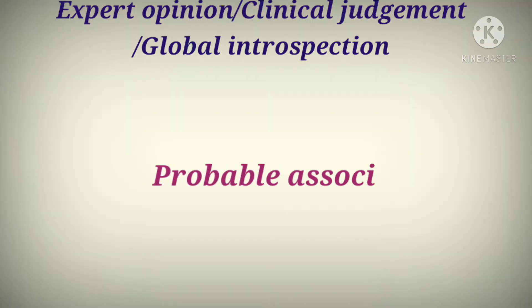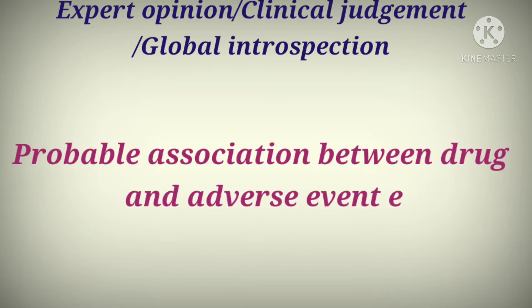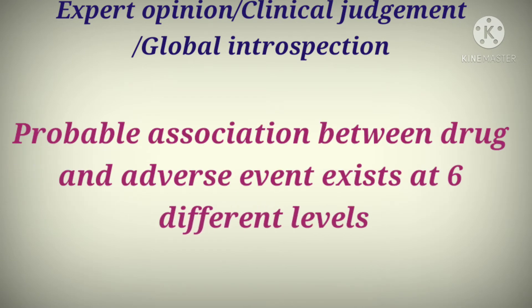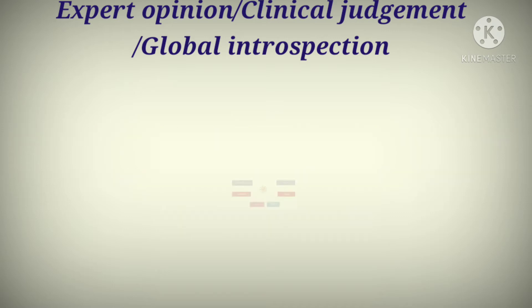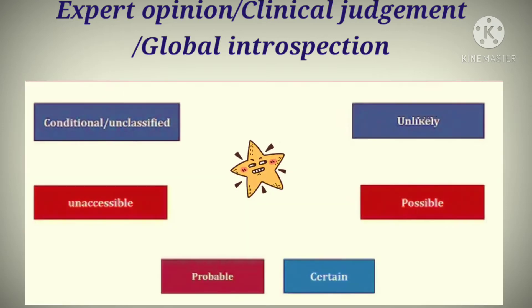As per this method, the probable association between drug and adverse event exists at six different levels: 1. Conditional or unclassified, 2. Unlikely, 3. Unassessable, 4. Possible, 5. Probable, and 6. Certain.